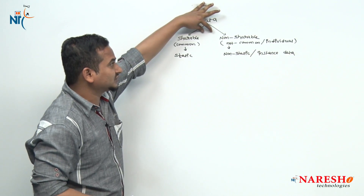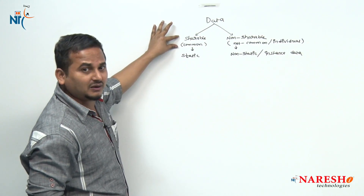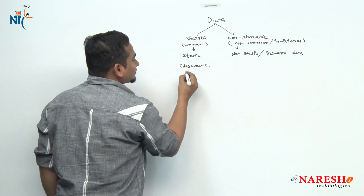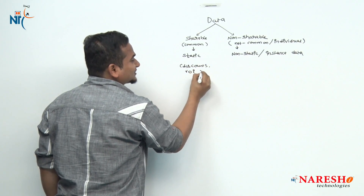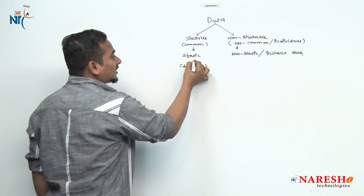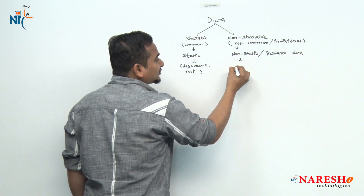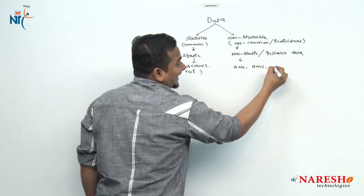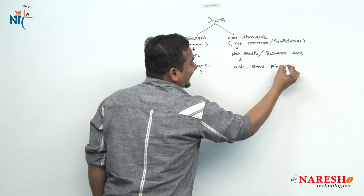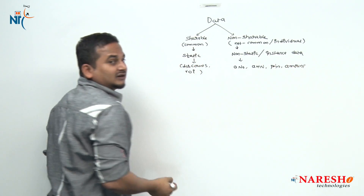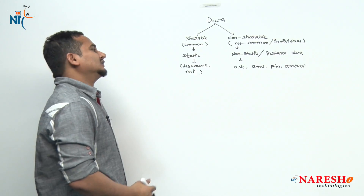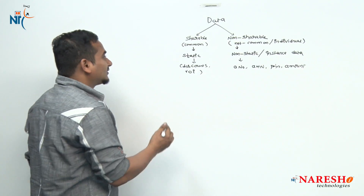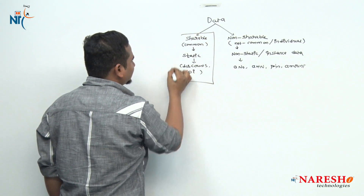Data is classified into two types — shareable and non-shareable. Shareable means common for all; for example, discounts and rate of interest come under static data. Non-static data includes account number, account holder name, pin number, and amount. In this particular video, I am going to concentrate on only static data.